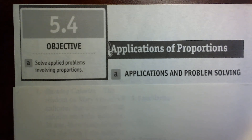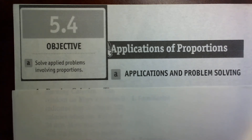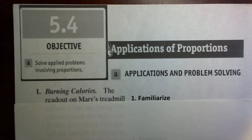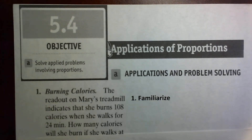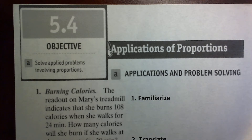In section 5.4 we are going to apply what we've learned about proportions, so it's all about applications and how to apply that to problem solving. Here's the first problem: burning calories. The readout on Mary's treadmill indicates that she burns 108 calories when she walks for 24 minutes. How many calories will she burn if she walks at the same rate for 30 minutes?